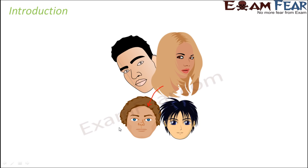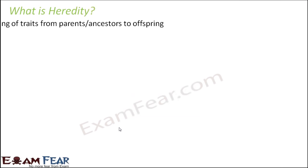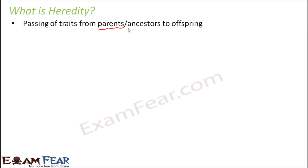This is where we talk about heredity. The word 'inheritance' means passing on something from one generation to the next. When we talk about heredity, we talk about how characters or traits are being passed on from one generation to another. So heredity is the passing of traits from parents or ancestors to offspring. It is not necessary that you get a feature only from your parents — you can get it from your grandparents as well. The traits or characteristics or features are getting passed on from one generation to the other.